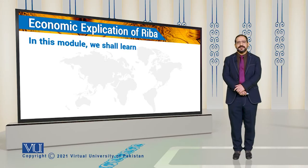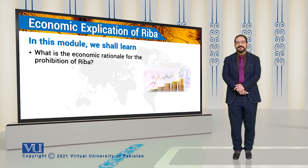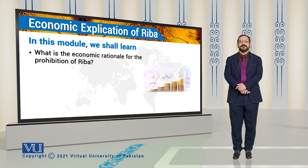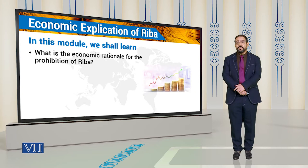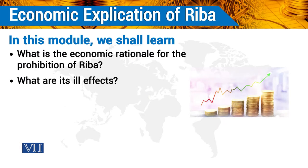We call it 'Economic Explication of RIBA.' In this way, we want to know: what is the economic rationale for the prohibition of RIBA? What are the effects of using RIBA in a transaction and in an economic system?